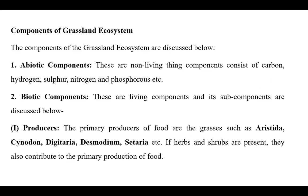Now let us discuss about the components of grassland ecosystem. As we know, in every ecosystem there are two types of components: first, the abiotic components, and second, the biotic components. The abiotic components include all non-living things which make up the physical environment, such as carbon, hydrogen, sulfur, nitrogen, and phosphorus.